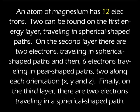Let's read our board now. Based upon what's in our board, we can say that magnesium has a total of 12 electrons in its electron cloud. Two electrons can be found traveling on the first layer in a spherical shaped path. On the second level, we'll have two electrons traveling in a spherical shaped path, as well as a total of six electrons traveling in the 2p, or pear shaped path. Two of those electrons will be traveling in the x orientation, two in the y orientation, and two in the z orientation. On the third level, we have two electrons traveling in a spherical shaped path.